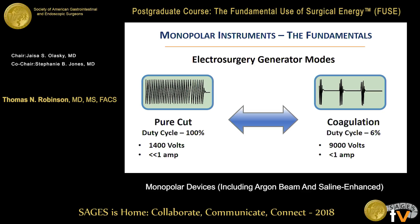So what do we need to think about when we talk about the modes of the generator? If you have a graphic picture of the waveform, cut is a continuous duty cycle — you see no pauses. In coagulation, you see the pauses. Being able to recognize the difference between that continuous waveform and the one with pauses is important. What's really critical to know is the difference in volts — the electromotive force. Power, which is your watts, is volts times current. When you're on pure cut, current is going out the whole time with no pauses; it's a much lower voltage and higher current.